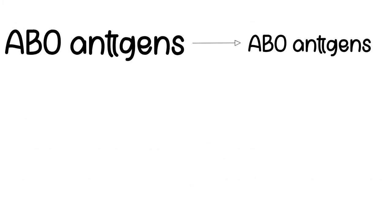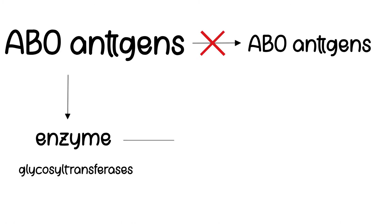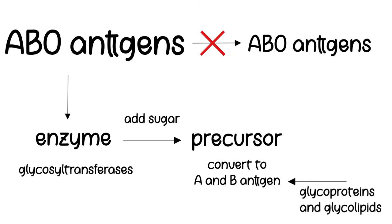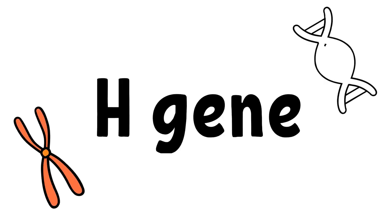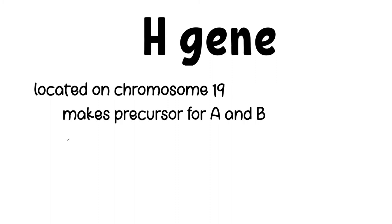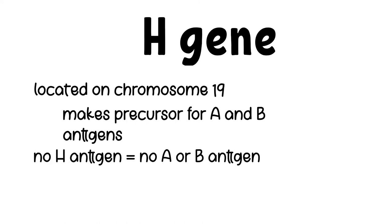The ABO genes are not coded for production of ABO antigens directly. They code for enzymes — glycosyl transferases. These enzymes add sugar to the precursor, which is then expressed as A or B antigens on the surface of red blood cells. Therefore, ABO antigens are not protein antigens; they are small carbohydrate epitopes on glycoproteins or glycolipids. The ABO expression is also regulated and influenced by another gene, the H gene. The H gene is located on chromosome 19 and codes for H antigen, which is a precursor structure for A and B antigen. Without H antigen, no A or B antigen can be expressed regardless of ABO genotype.